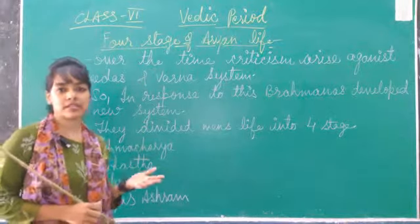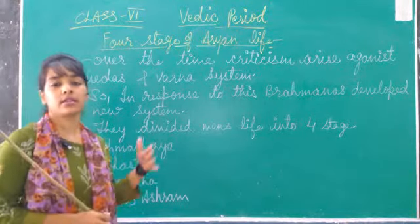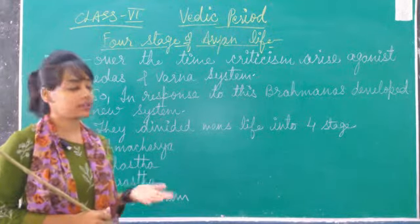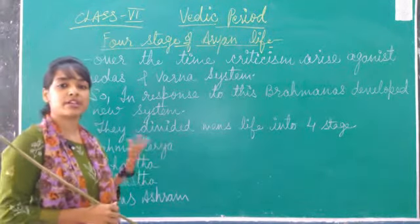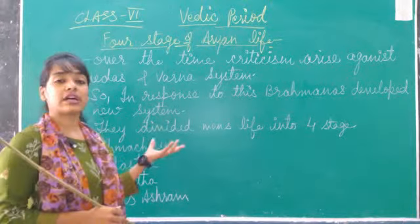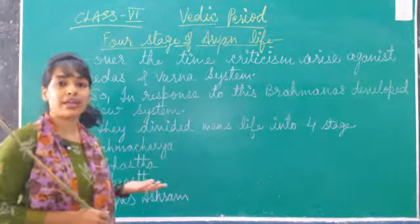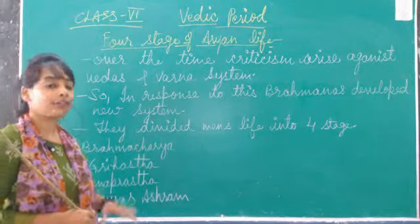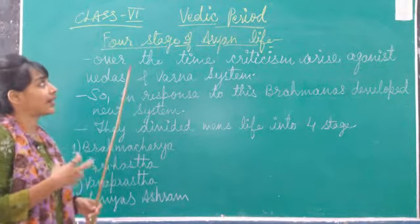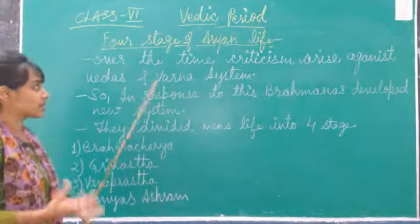Now there are so many criticisms when they divided the society into 4 categories. People don't like this kind of system — it is based on the caste system. There are Shudras kept as untouchables, so many people don't like this type of Varna system. So again, they divided the life of the people into 4 stages.